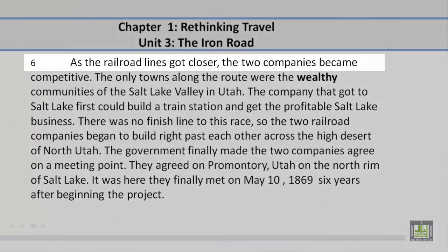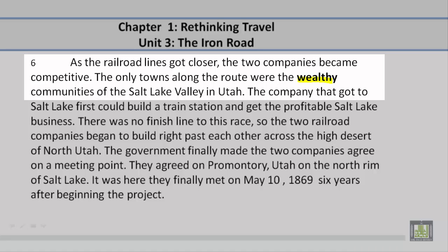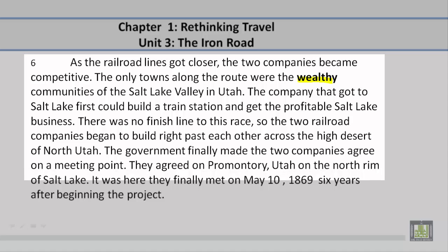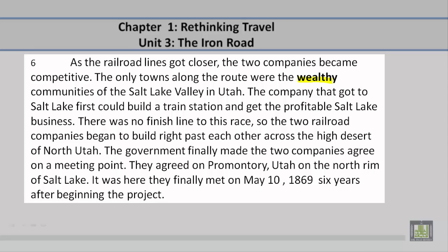Paragraph 6. As the railroad lines got closer, the two companies became competitive. The only towns along the route were the wealthy communities of the Salt Lake Valley in Utah. The company that got to Salt Lake first could build a train station and get the profitable Salt Lake business. There was no finish line to this race, so the two railroad companies began to build right past each other across the high desert of North Utah. The government finally made the two companies agree on a meeting point. They agreed on Promontory, Utah, on the north rim of Salt Lake. It was here they finally met on May 10, 1869, six years after beginning the project.